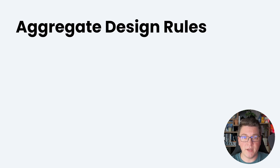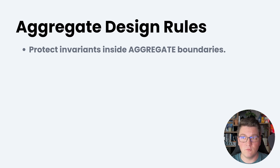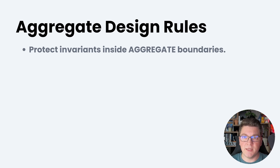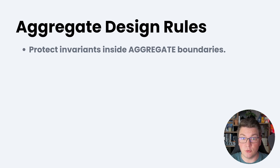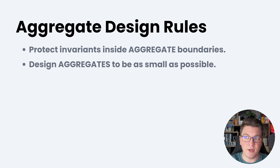Let me give you some guidelines for designing a good aggregate, though a lot of this will be trial and error. First, protect your invariants inside the aggregate boundaries — this is the most important concept. Aggregates represent a consistency boundary inside your domain, within which invariants must always be true. Second, design aggregates to be as small as possible: this reduces the surface area for things to go wrong, makes consistency rules easier to enforce, and reduces concurrency conflicts.